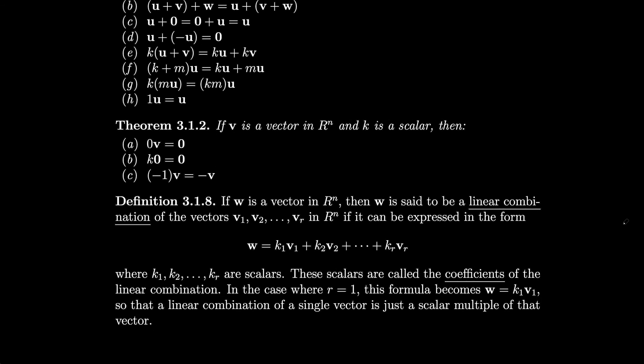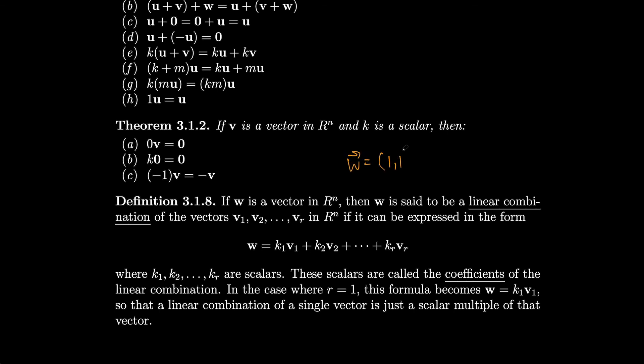If w is a vector in R^n, then w is said to be a linear combination of the vectors v1, v2, ..., vr in R^n if it can be expressed as w equals k1*v1 plus k2*v2 plus ... plus kr*vr, where k1, k2, ..., kr are scalars called the coefficients of the linear combination. When r equals 1, a linear combination of a single vector is just a scalar multiple of that vector. For example, the vector (1, 1) can be written as a linear combination of (1, 0) and (0, 1) by taking k1 equals 1 and k2 equals 1: 1 times (1,0) plus 1 times (0,1) equals (1,1).